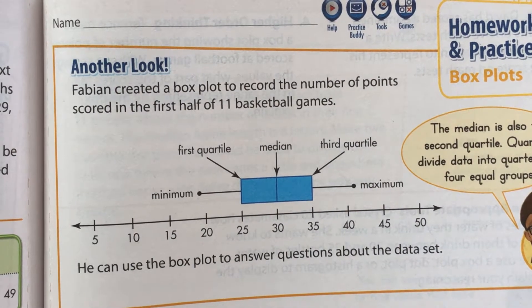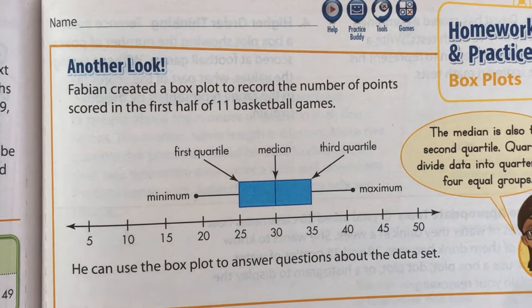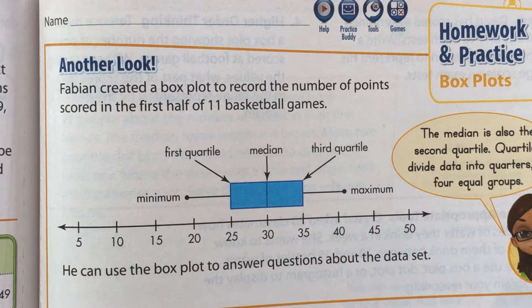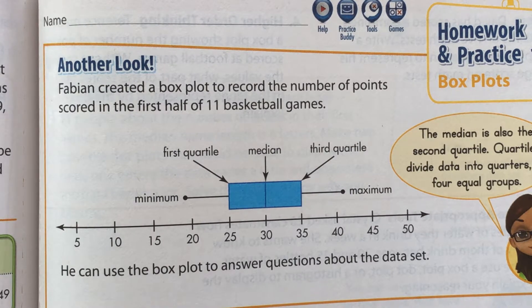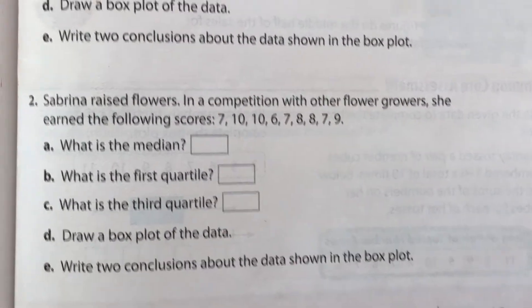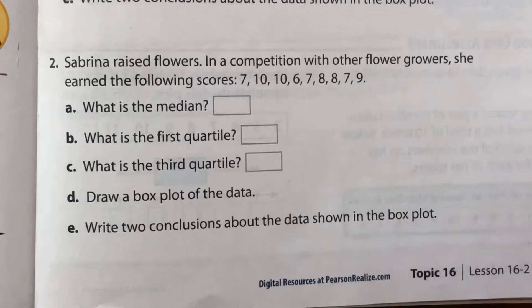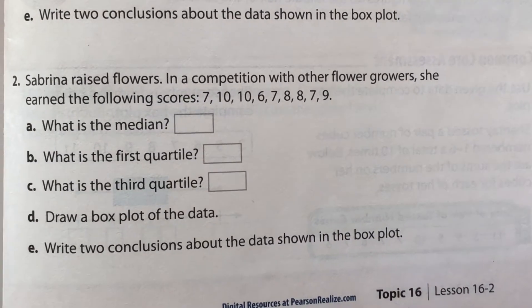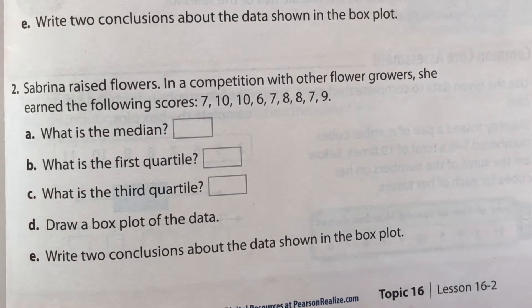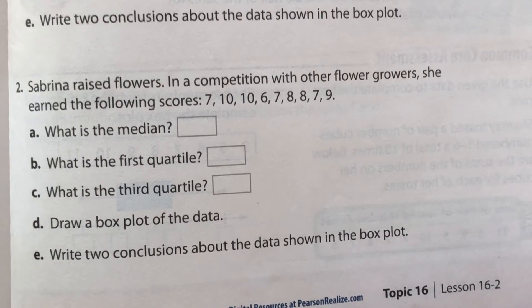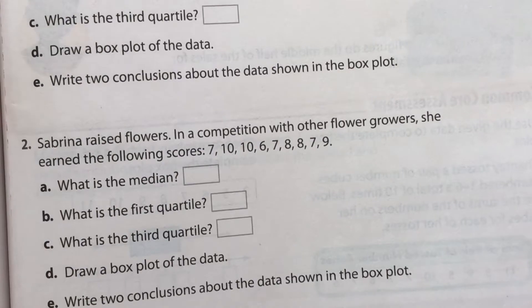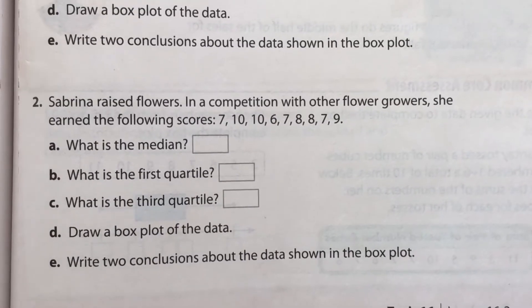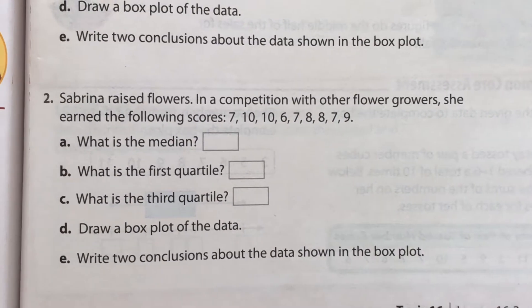So we're going to do an example together and we're going to find the median, the first quartile, the third quartile, and then we're going to draw our own box plot. So right now I am on page 795 in your workbook. So it's problem number two. And it says, Sabrina raised flowers in a competition with other flower growers.